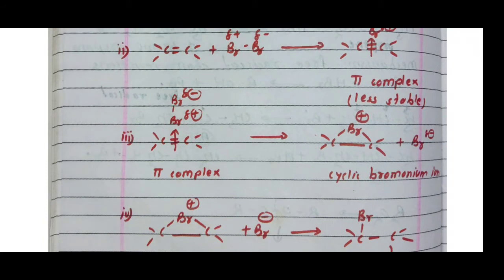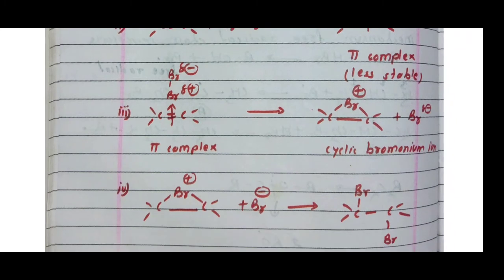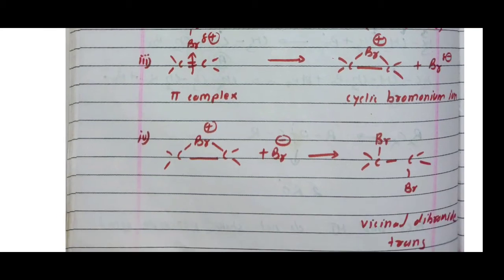Step three: the positively charged bromine atom is attracted by both carbon atoms, leading to breakage of the Br-Br bond. The electrophilic Br⁺ atom bonds to both carbon atoms to form a cyclic bromonium ion. The negatively charged bromine ion (Br⁻) is the leaving group. In step two we have pi complex formation; in step three we have cyclic bromonium ion formation.